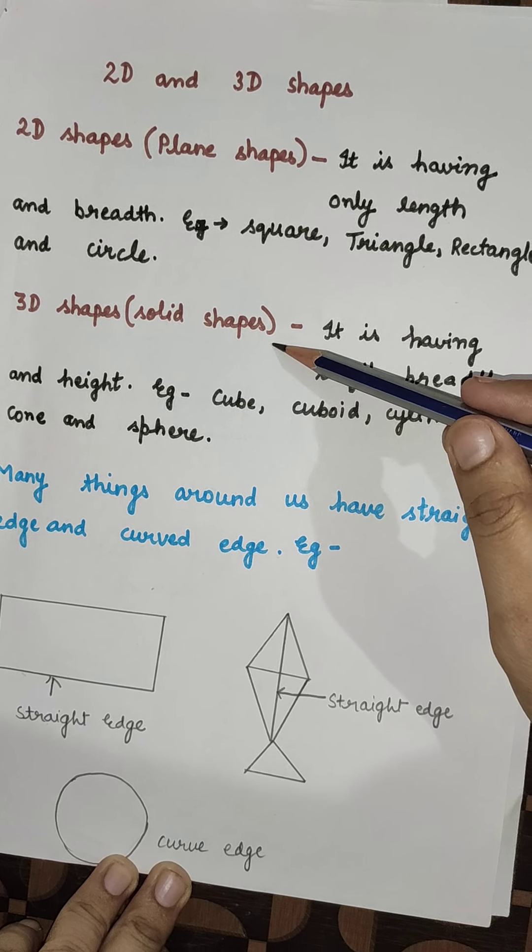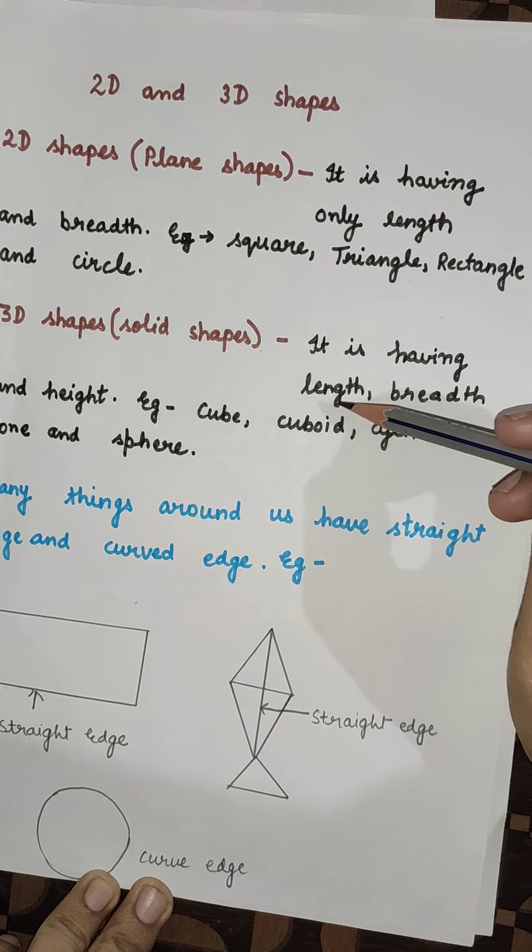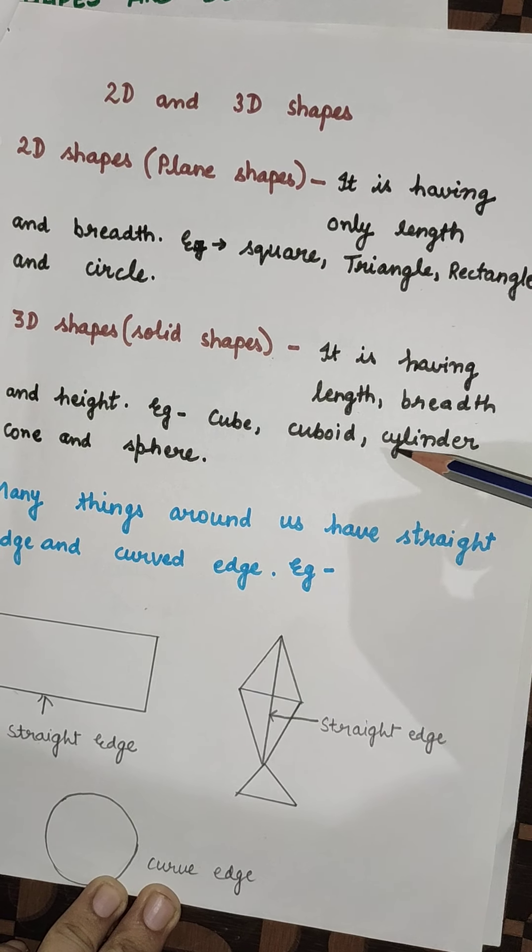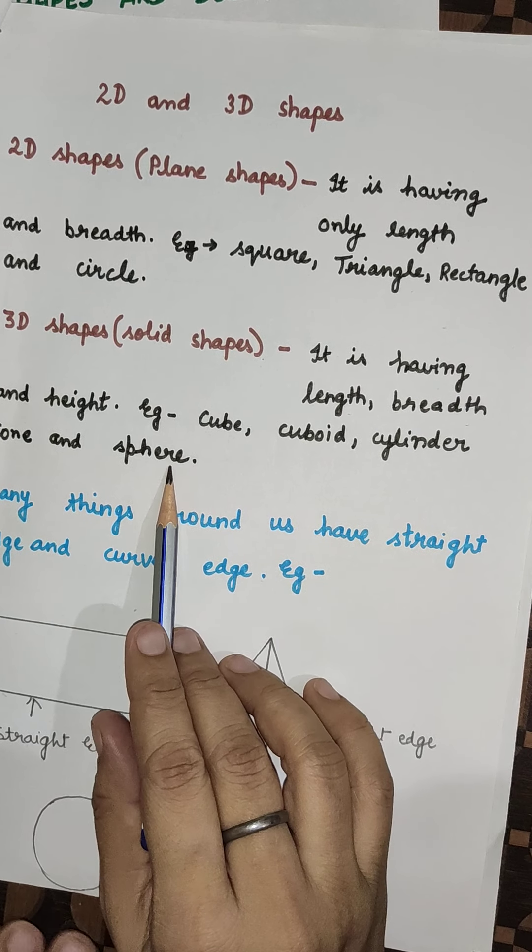3D Shapes, that is solid shapes. We can say that these are the solid shapes also. It is having length, breadth and height. Examples are Cube, Cuboid, Cylinder, Cone and Sphere.